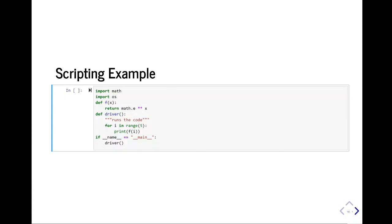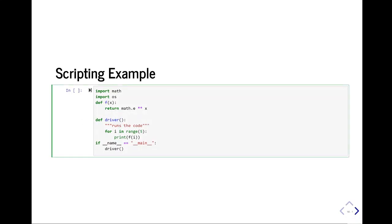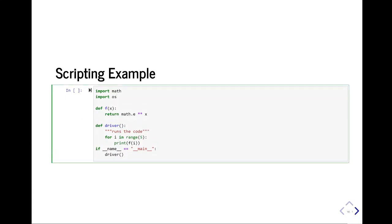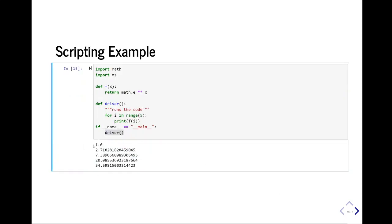So, let's see a full example from the code we had before. So, here's our inputs. We defined our functions, and now we're going to start here. And here you go. We have all our values that get printed out when we raise e to x, which comes from the range 0 through 5. So, e to the 0, e to the 1, e to the 2, e to the 3, e to the 4.